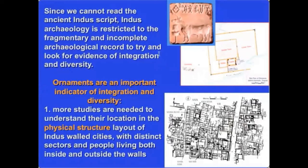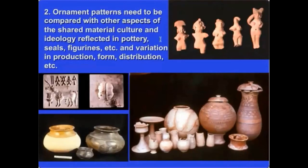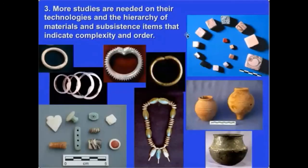To conclude: since we cannot read the Indus script, Indus archaeology is restricted to a fragmentary and incomplete archaeological record to look for evidence of integration and diversity, and ornaments are an important indicator of both. We need more studies of the physical structures where ornaments were found, more comparison of ornament styles with pottery, figurines, seals, and food habits, and more studies of technology — how ornaments were produced and modified. Through this, we will begin to understand more about the complex role these had within the Indus cities.